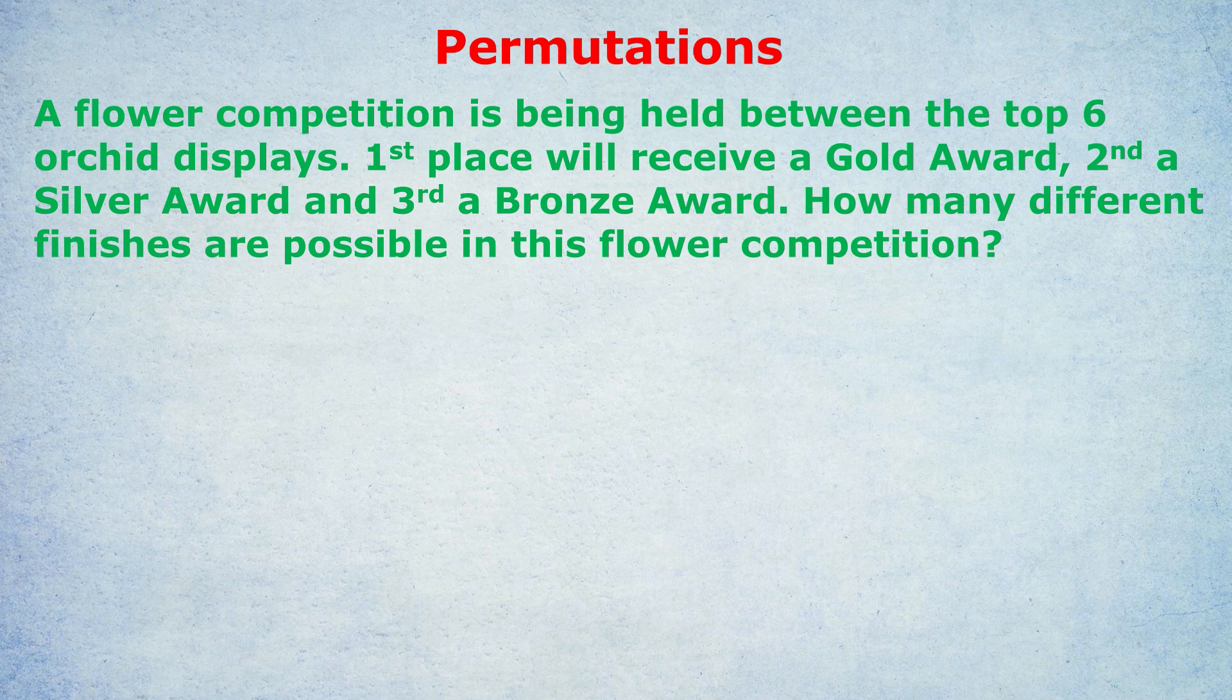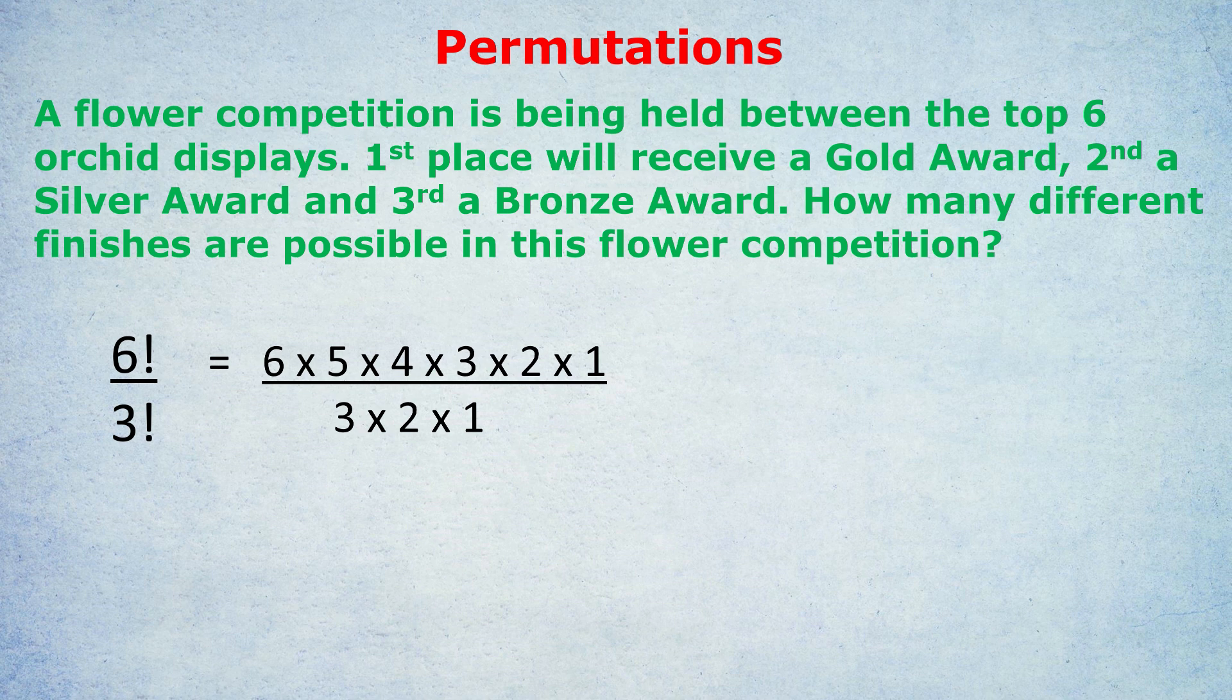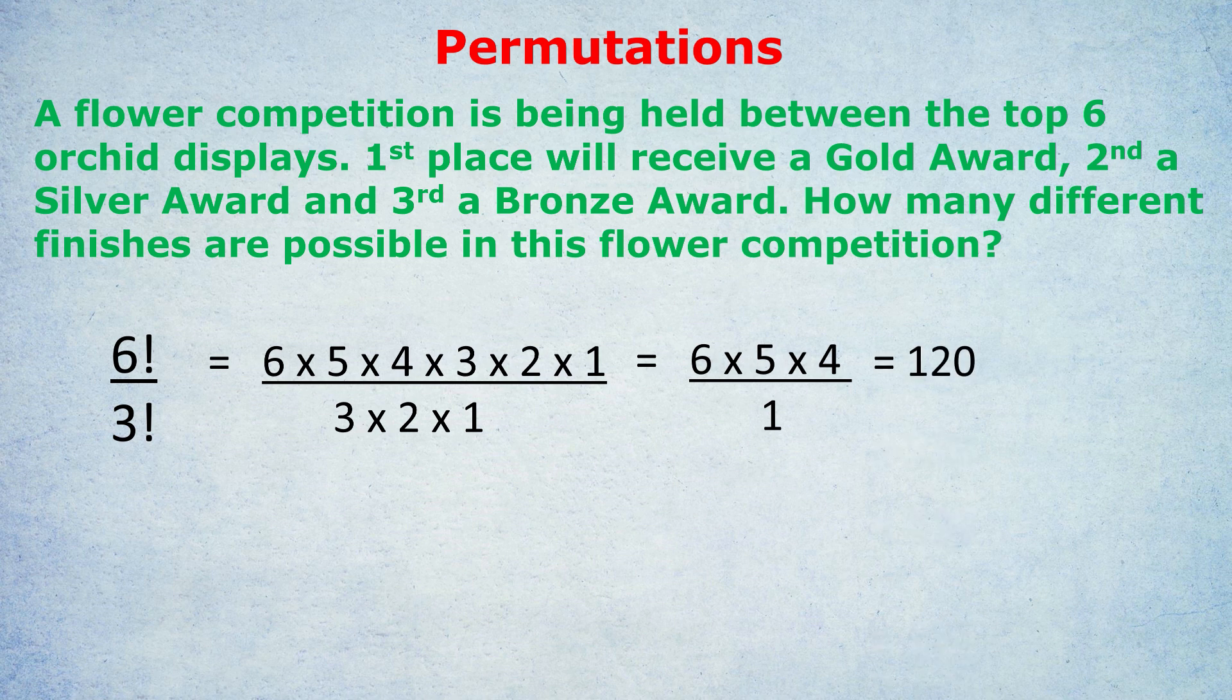Let's see with the next question if you can spot permutations or combinations. A flower competition is being held between the top 6 orchid displays. First place will receive a gold award, second a silver award and third a bronze award. How many different finishes are possible in this flower competition? Hopefully most of you got that this was indeed a permutations question. There is a difference between ABC and CBA. Getting first and a gold is different from getting second than a silver. So the order does matter. So we're going to apply the permutations formula. This lends itself to a simple cancellation. The 3, 2, 1 cancels out and we just have 6 times 5 times 4, which I believe is 120. So there are 120 different finishes in this flower competition.